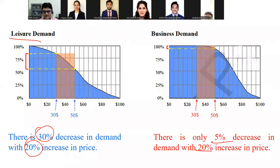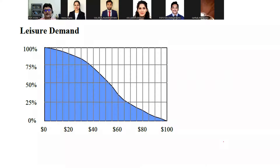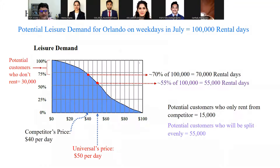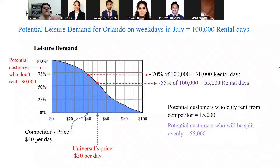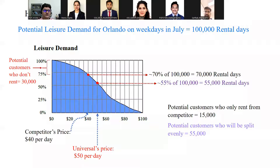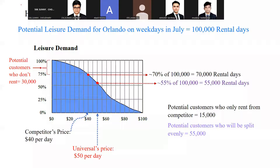Leisure customers are more price sensitive. Now, how do we calculate demand from leisure customers? This is the demand curve for leisure customers. For example, assume the demand for leisure customers in Orlando in July is 100,000 rental days. The simulation also includes one competitor operating in these three markets. If your competitor sets a price of $40 per day and your price is $50 per day, how do we determine how much demand each company receives? This is determined by the following approach.